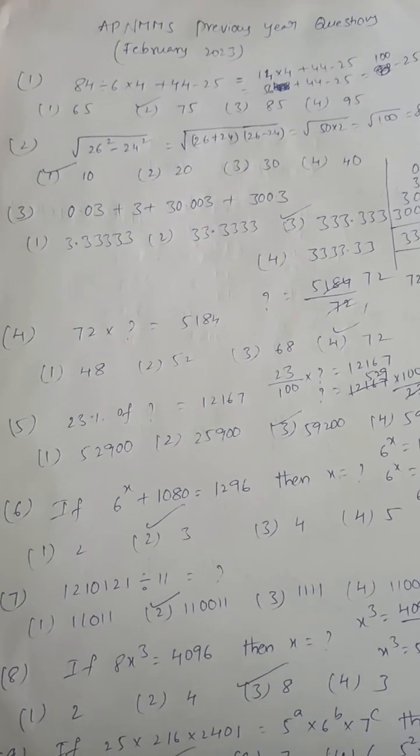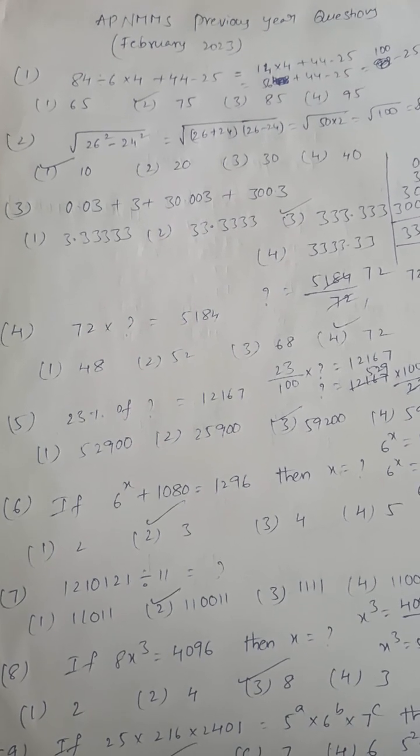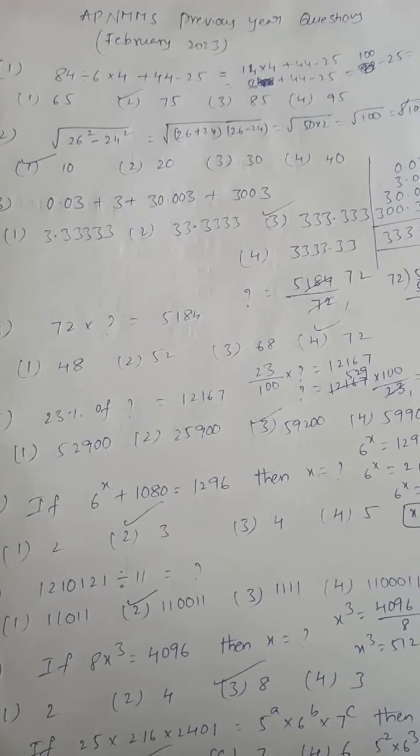56 plus 44 is 100, 100 minus 25 is 75. So the answer is option 2.